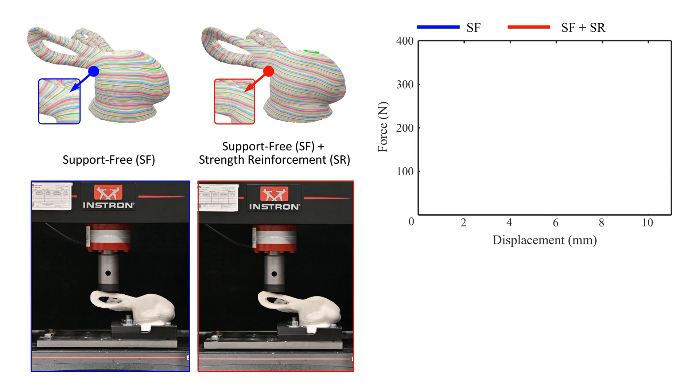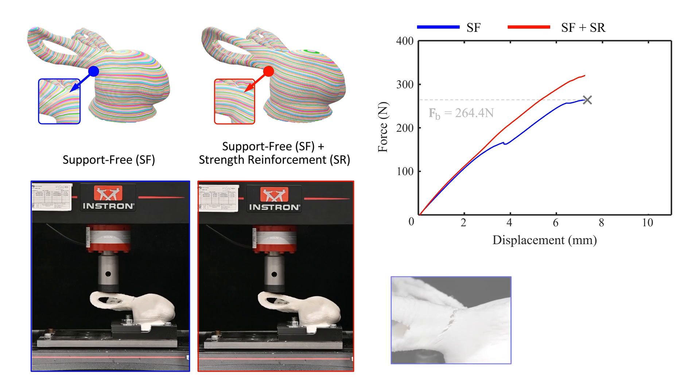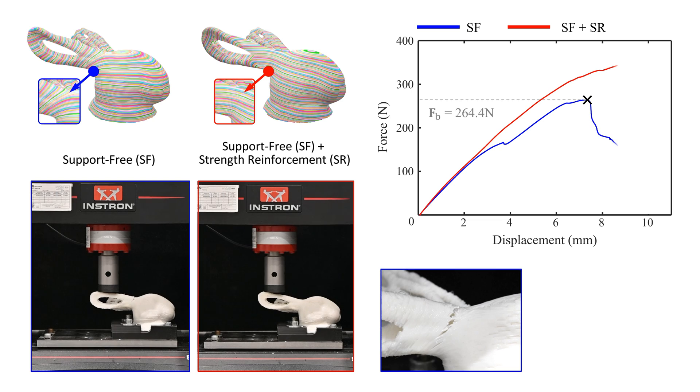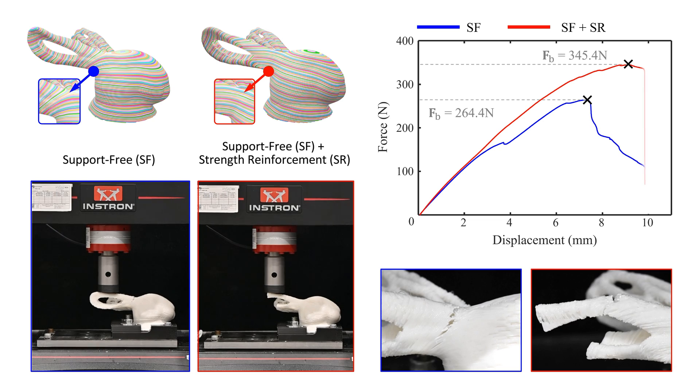Our neural slicer can generate curved layers considering different manufacturing objectives. For example, we first only consider the support-free requirement on the bunny head model. Then the strength reinforcement requirement is added. Their mechanical strength is evaluated by the compression test. A 30% increase in the breaking force can be obtained, and the region of structural failure is changed from the root of the ear to the hole.